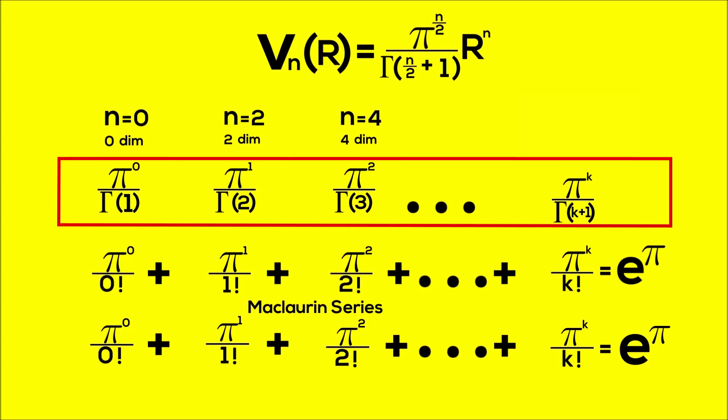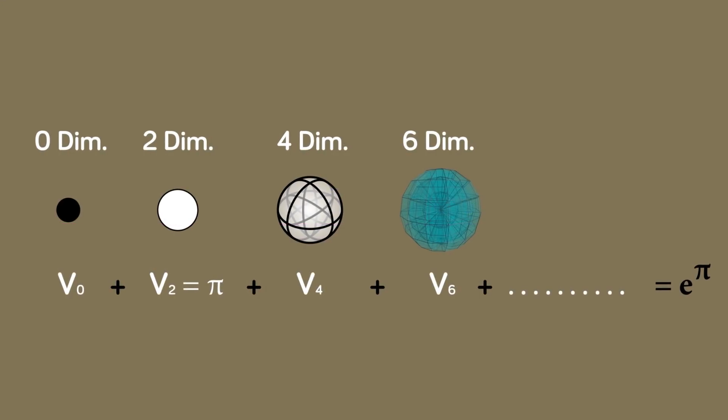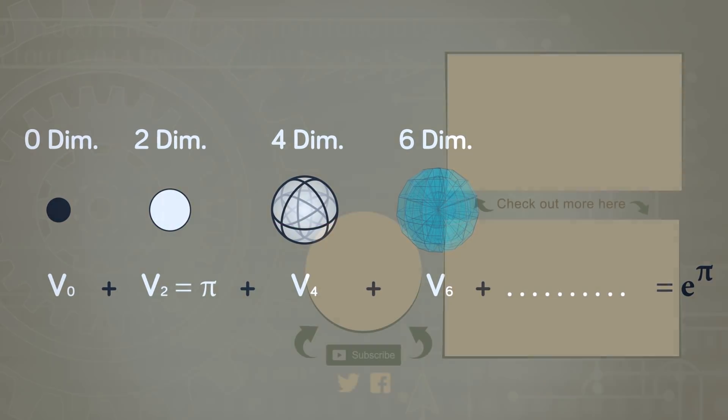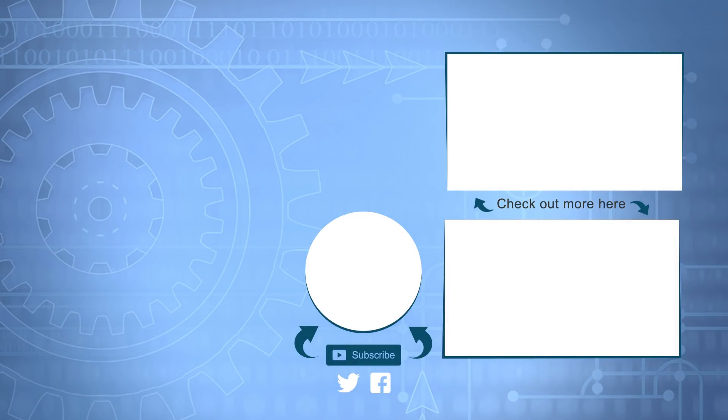which came from calculating all those even dimensional unit spheres. And we have finally come full circle to see why all those volumes sum to e to the pi. So hopefully that explains everything. Just wanted to make this quick follow up and we'll have a real video coming out soon. So if you guys enjoyed, be sure to like and subscribe. And I'll see you all next time.